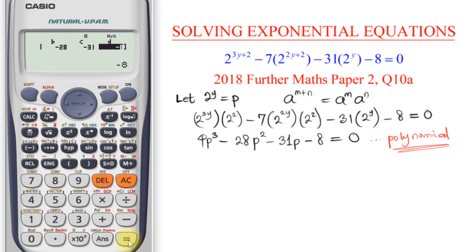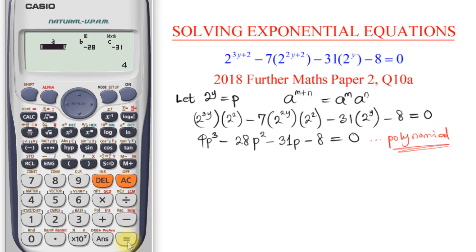I press equal to solve. One of the roots is 8, and the other root is minus 1 over 2. Those are the two roots the calculator gives us: x1 is 8, x2 is minus 1 over 2 — and one of them is repeated.